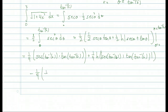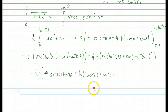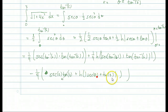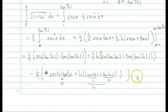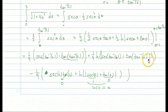Now plugging in the lower limit theta equals 0 is not too bad. Secant of 0 is 1 over cosine of 0, which is 1. Tangent of 0 is 0, so the first product term completely cancels out. For the logarithm, secant of 0 is 1 and tangent of 0 is 0, so we get the natural log of 1, which is 0. The whole second large term completely cancels out. Meanwhile, tangent and inverse tangent undo each other, leaving us with 6.